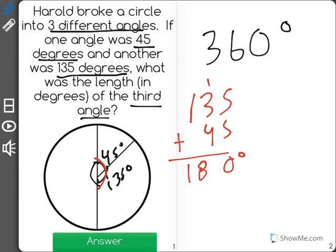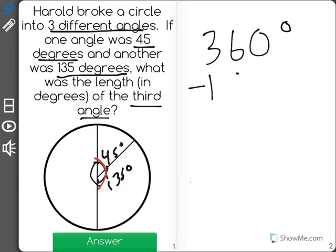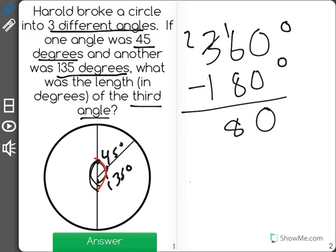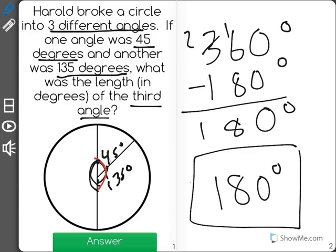So, out of the 360, we already have 180 degrees used. Now, I'm going to subtract 180 from 360 to find out the length of the missing angle. When I subtract this problem, I see that the missing angle should measure 180 degrees.